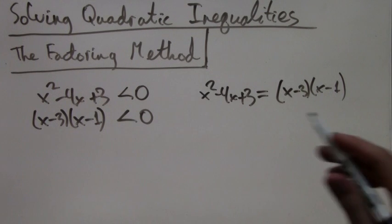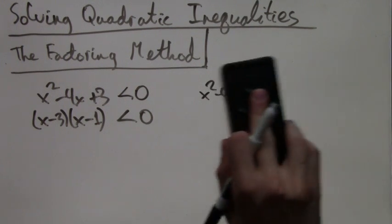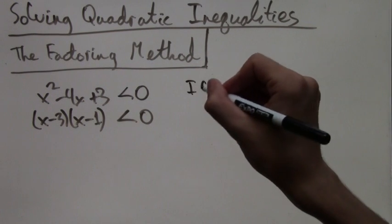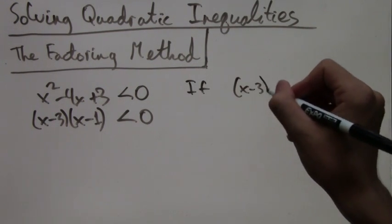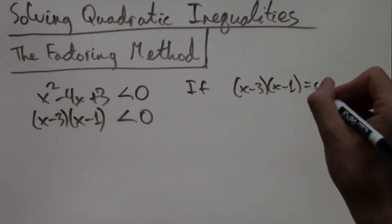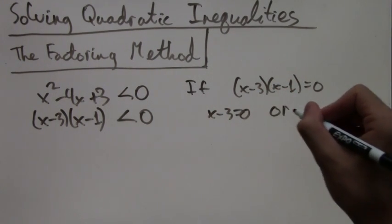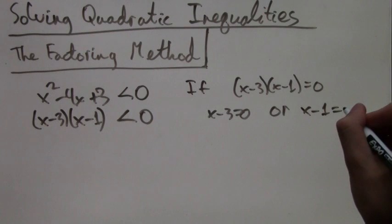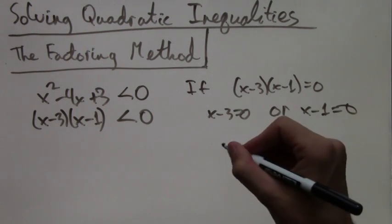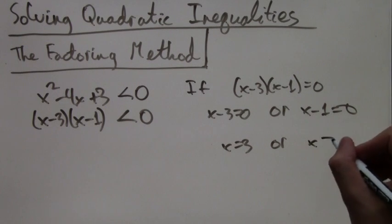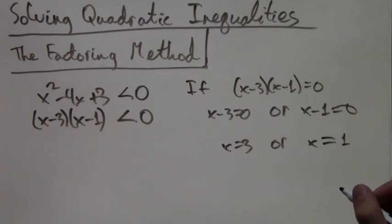So now we have this factored form of the inequality. Where do we go next? Next, we need to find the roots of this function. x minus 3 times x minus 1 equals 0. If that's true, then one of x equals 3 or x equals 1 must be true. So the two roots of this function are 1 and 3.